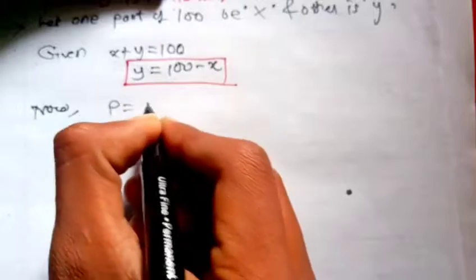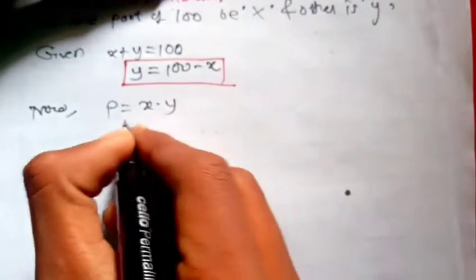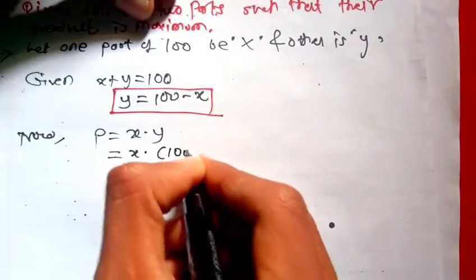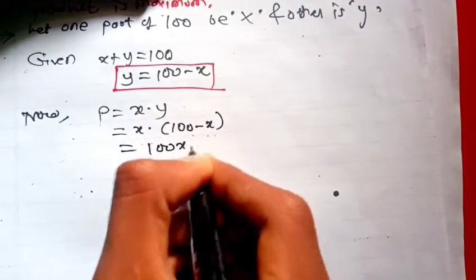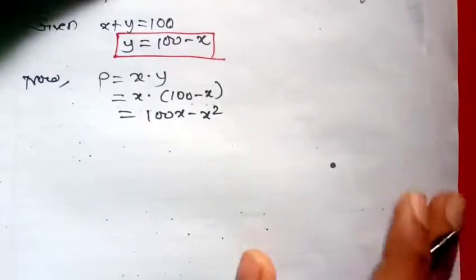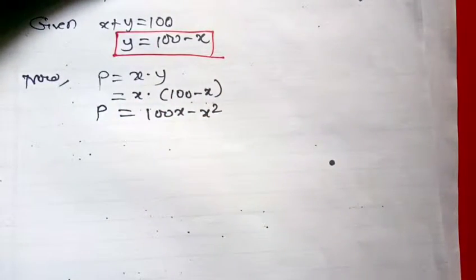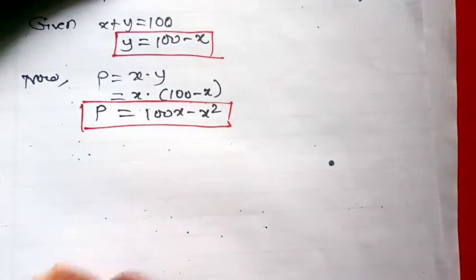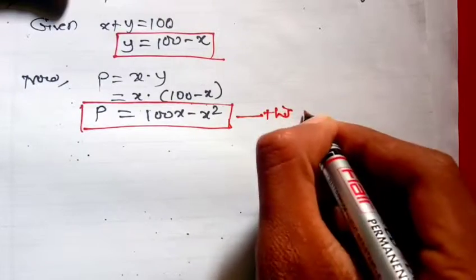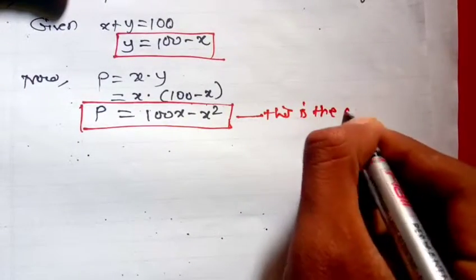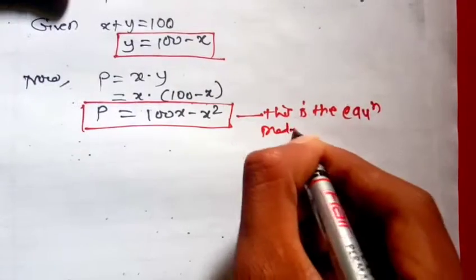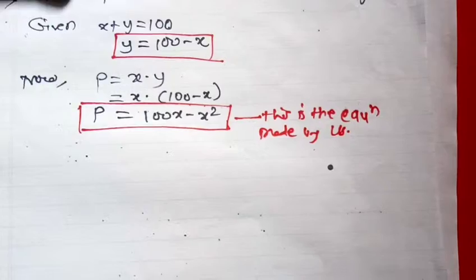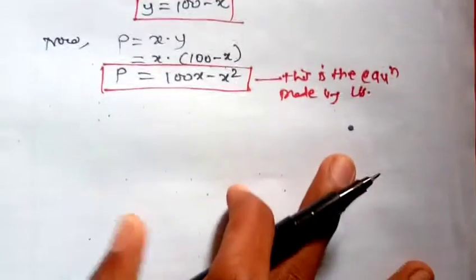The question asks for their product to be maximum. Product P equals X into Y, which is X into 100 minus X. So P equals 100X minus X squared.